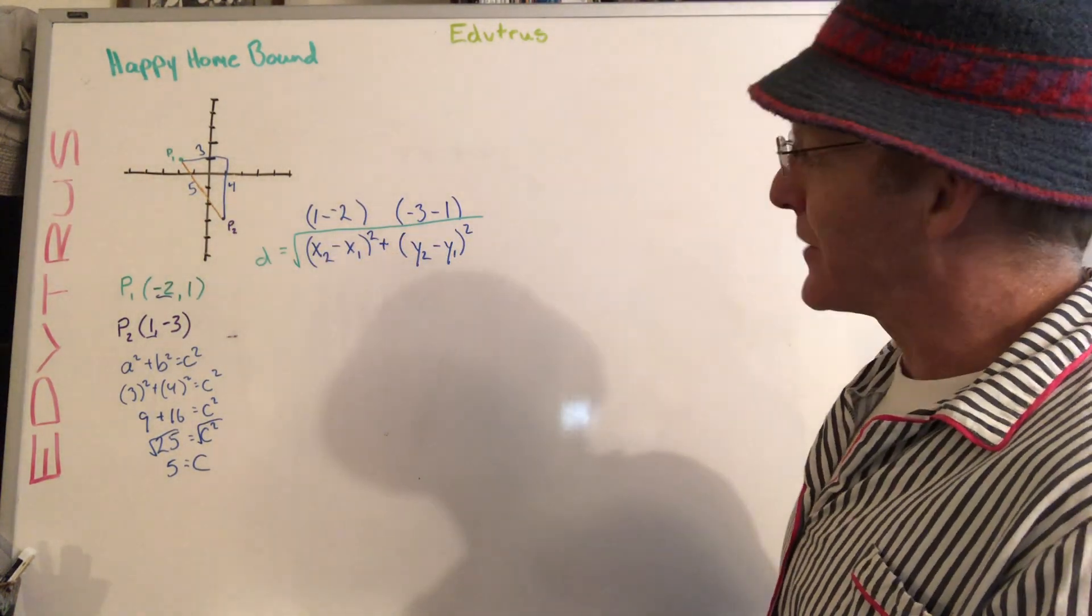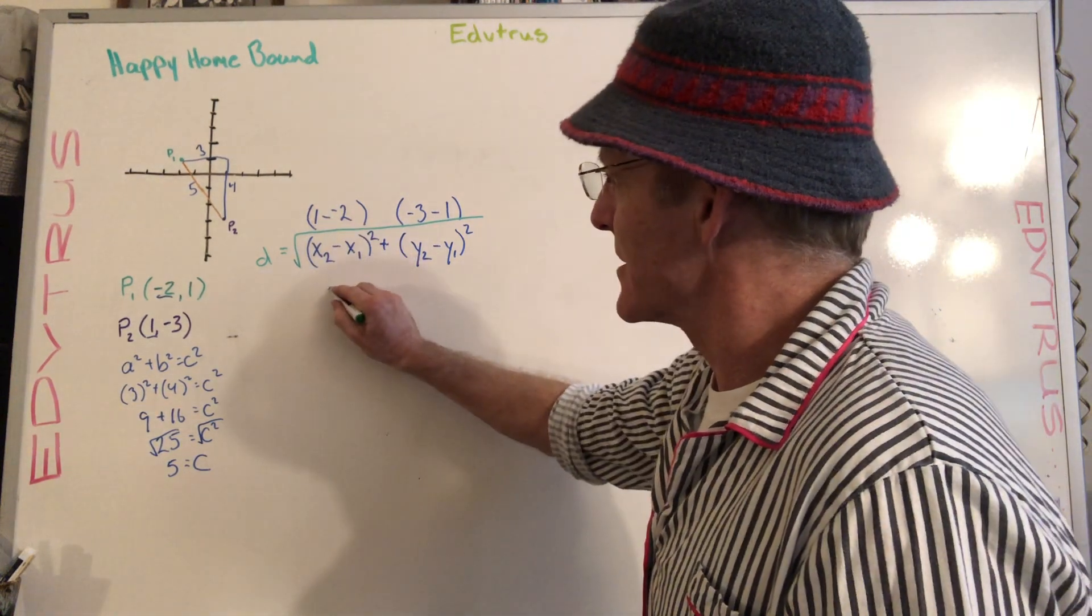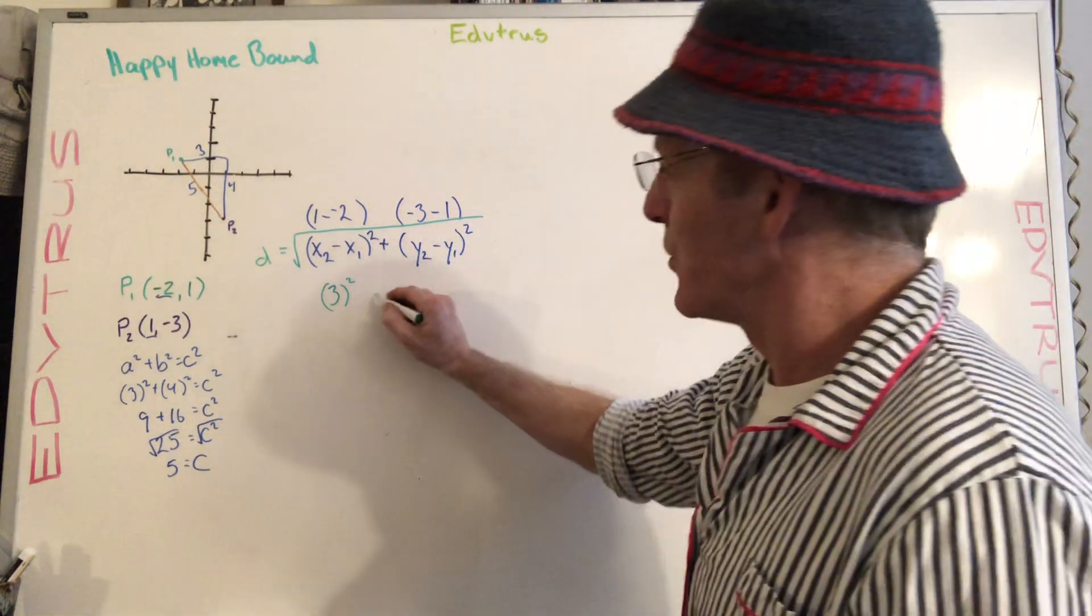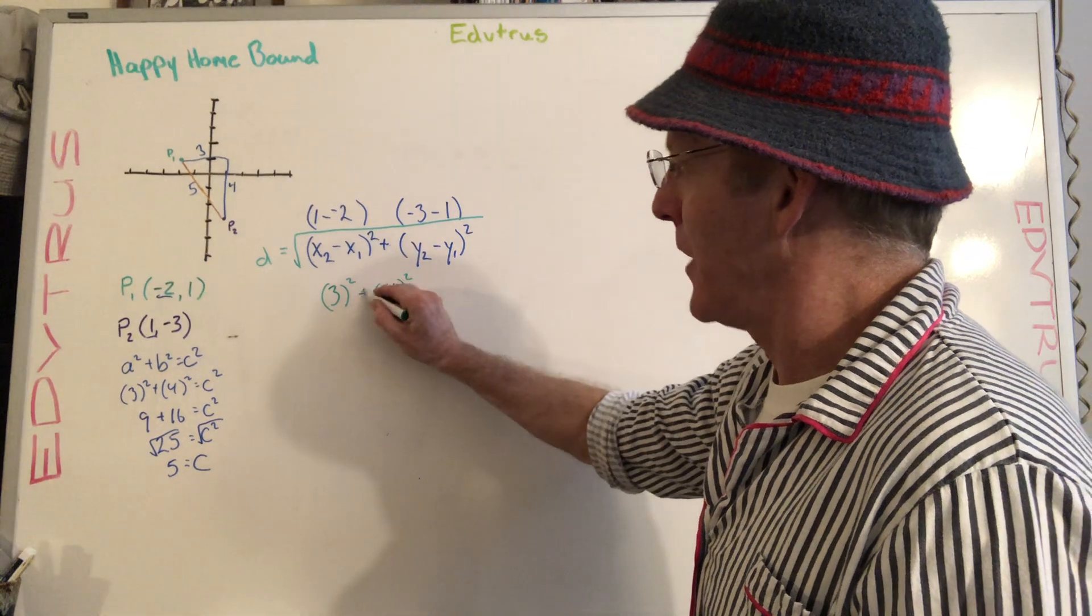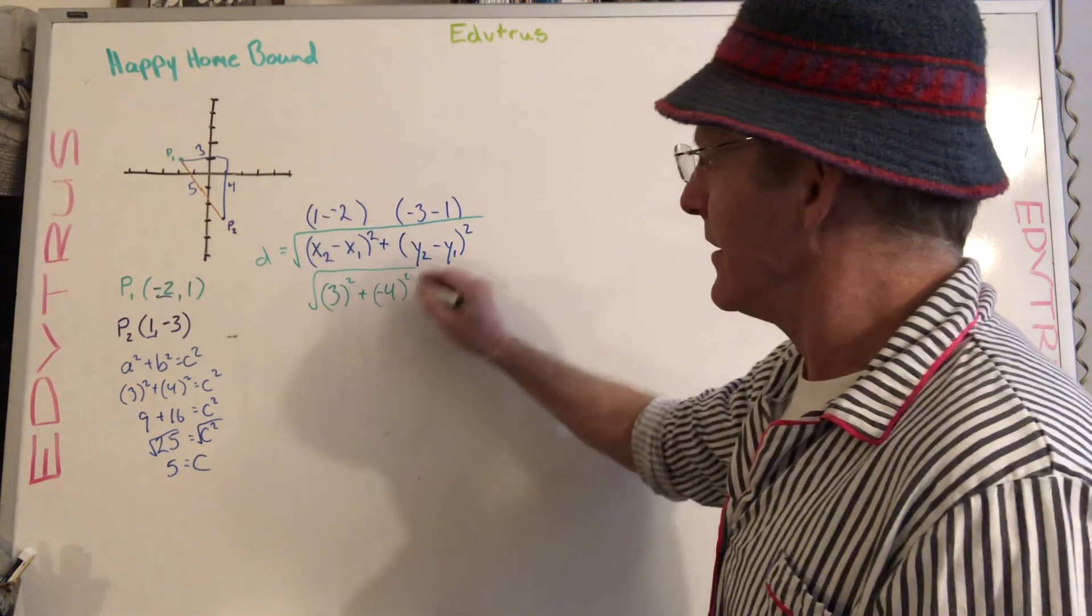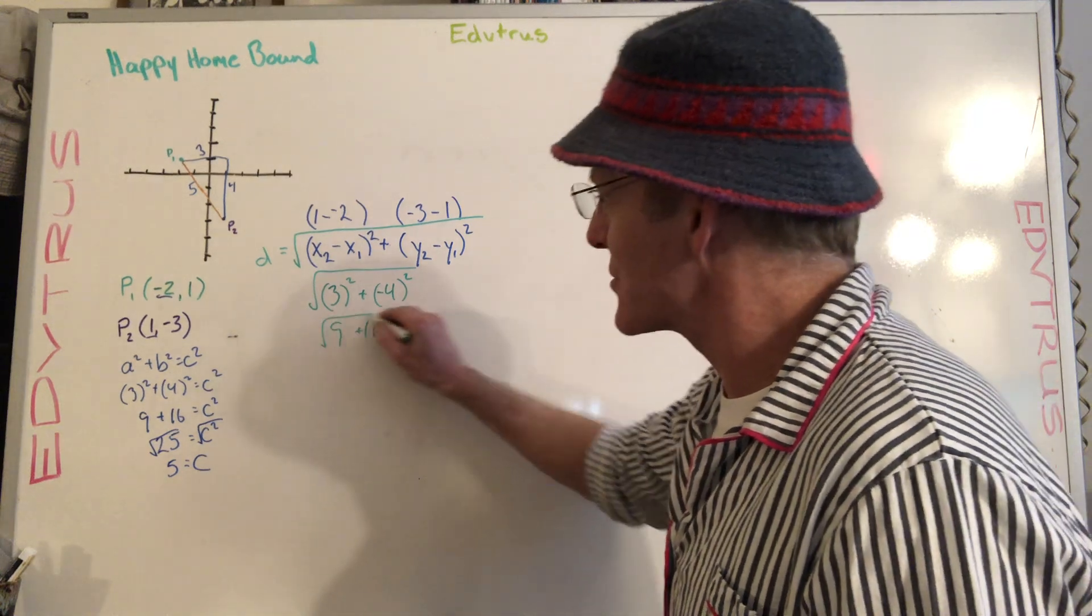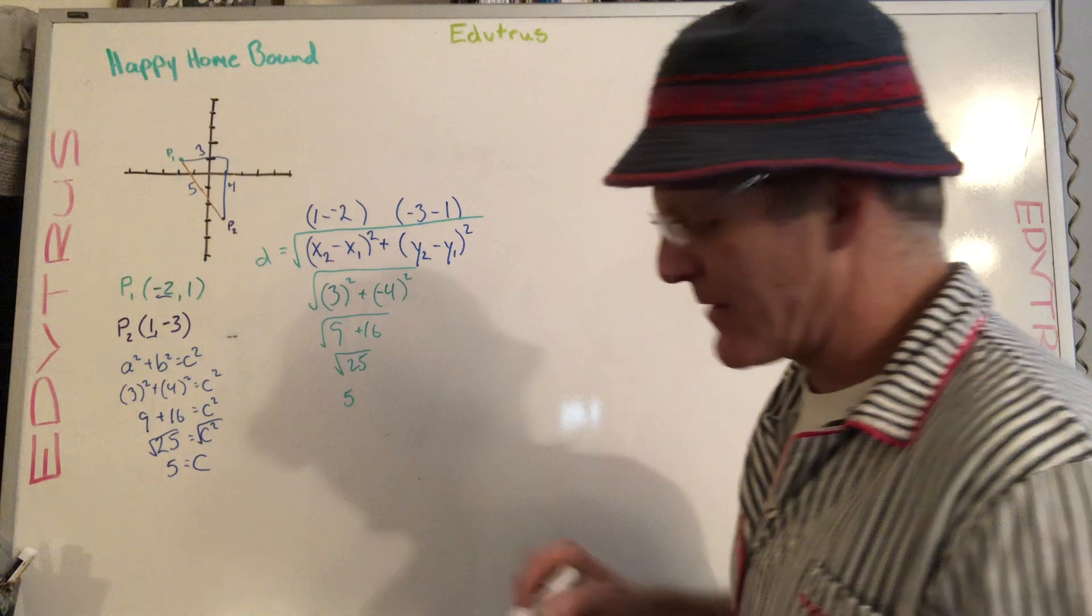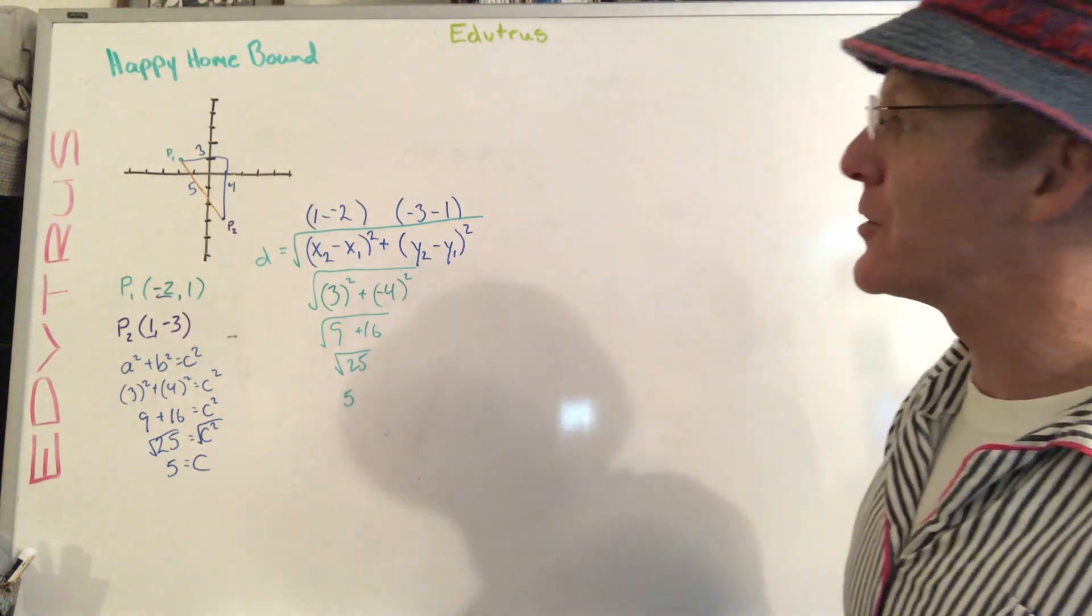Now if we do that, look, we end up getting one minus negative two is three, which we're going to square. Negative three minus one is negative four, which we're going to square. We're going to add them up, and then we're going to square root it. And so there's our nine, there's our 16, square rooting the 25, and we get the same value of five. So there you go on the distance formula. Really quickly, I want to do midpoint.